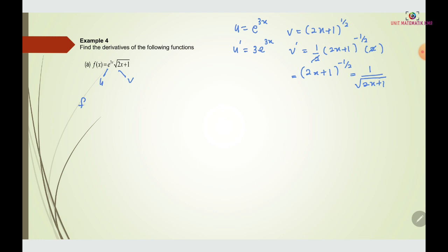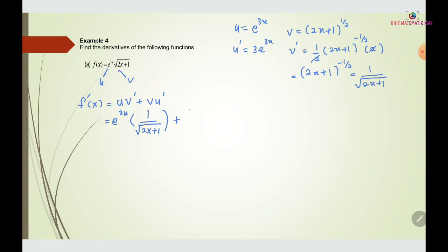Now we find f prime of x using the product rule: u·v prime plus v·u prime. So we have e to the power of 3x times v prime, plus (2x plus 1) to the power of 1 over 2 times u prime. We can see the common factor here is e to the power of 3x, and we also have (2x plus 1).